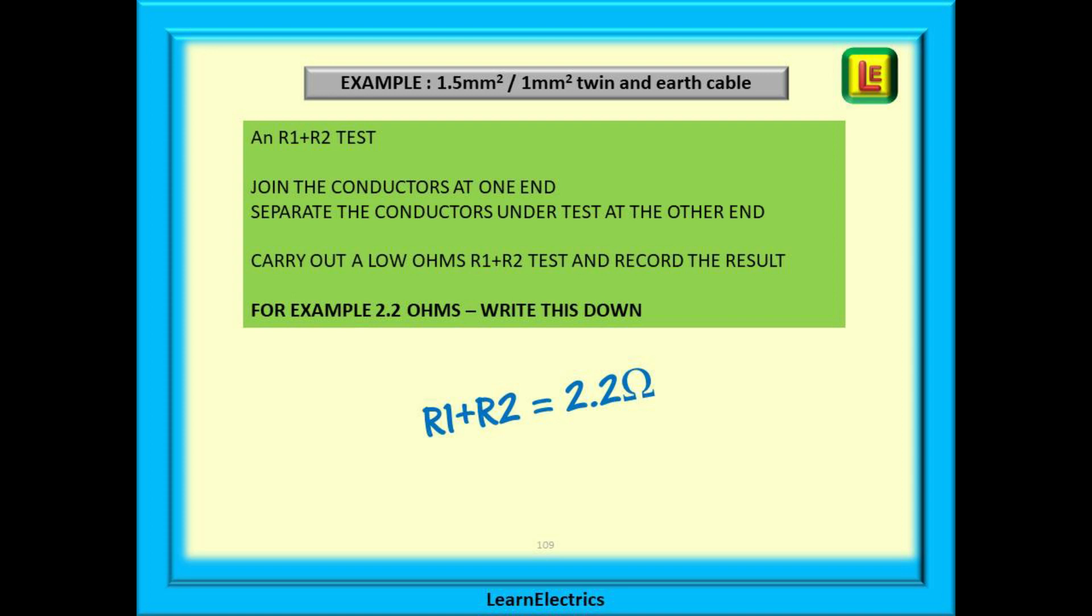To begin, join the two conductors together at one end with a connector block, a WAGO or crocodile clips. Make sure it is a good connection, as we are relying on the measured resistance to calculate the length.